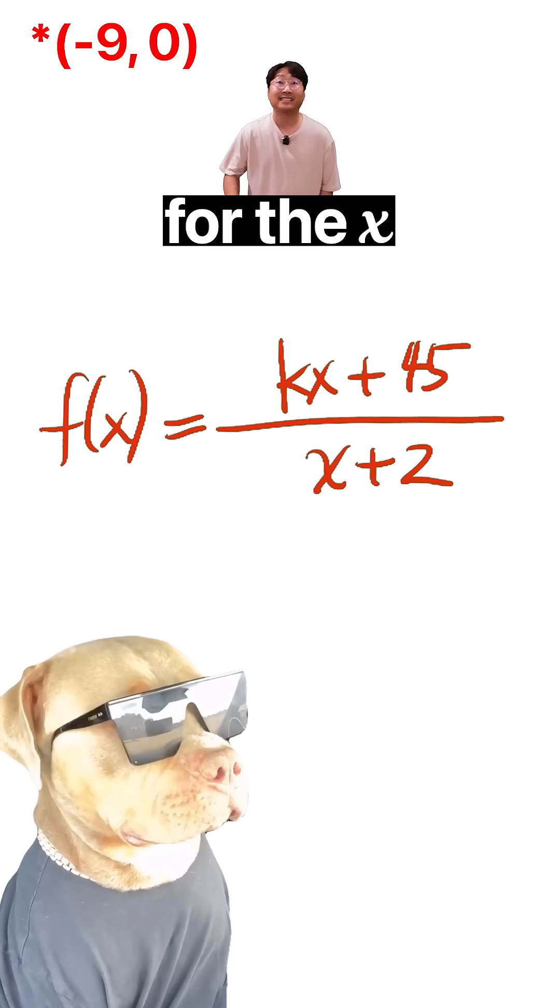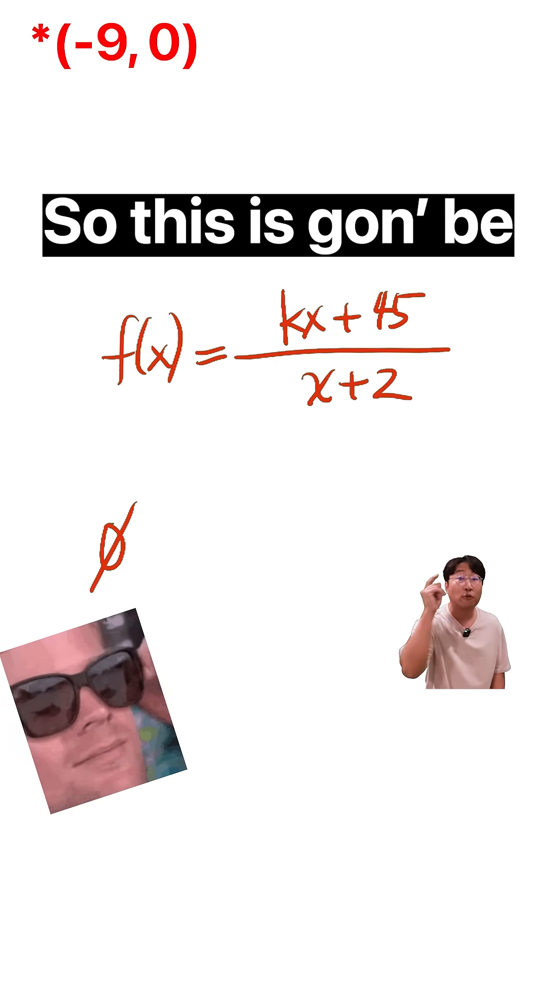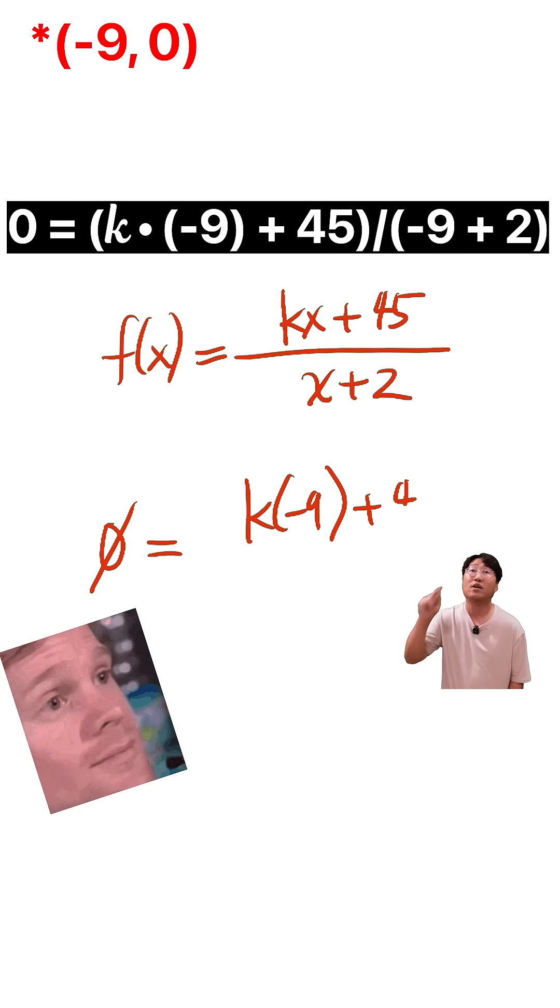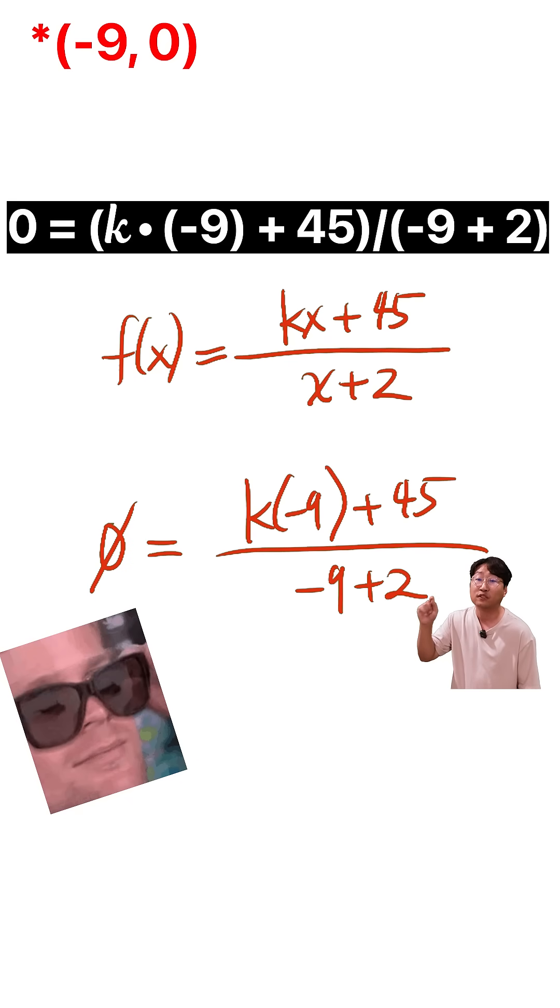This is going to be 0 is equal to k times negative 9 plus 45, all over negative 9 plus 2.